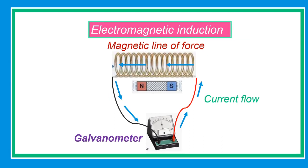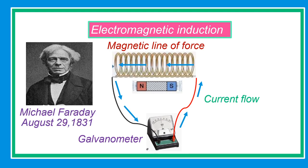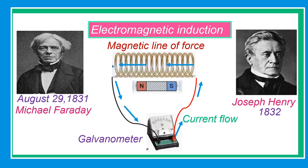Let's recall first magnetic induction, because without this theory we wouldn't have relays, magnetic contactors, motors, generators, or transformers. This principle is still used in most electrical utilities today. Electromagnetic induction was discovered independently by Michael Faraday in 1831 and Joseph Henry in 1832. Faraday was the first to publish the results of his experiments on August 29, 1831.